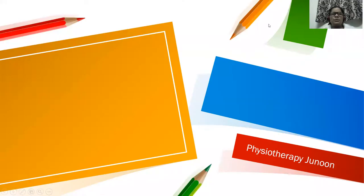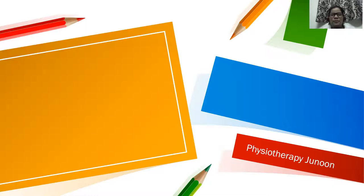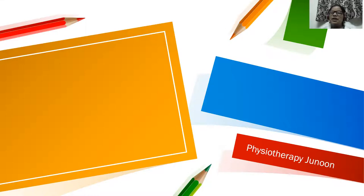Hello students, today our topic is tendinopathy — the different types of tendinitis and tendinosis. Welcome back to the Physiotherapy Junoon channel. Tendinopathy is a failed healing response of the tendon with haphazard proliferation of tenocytes.